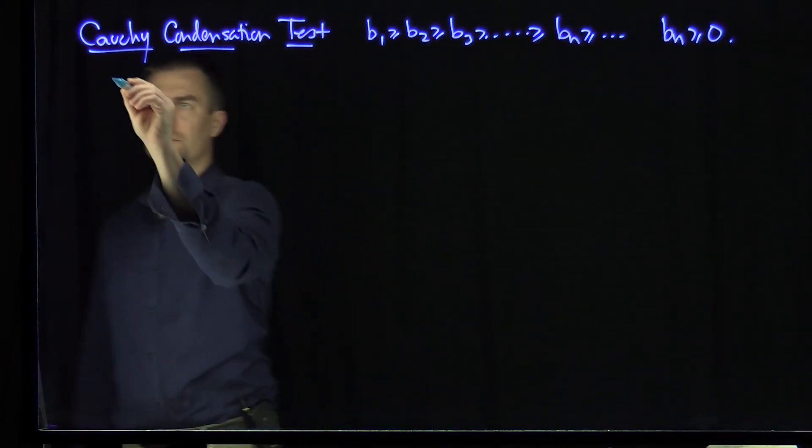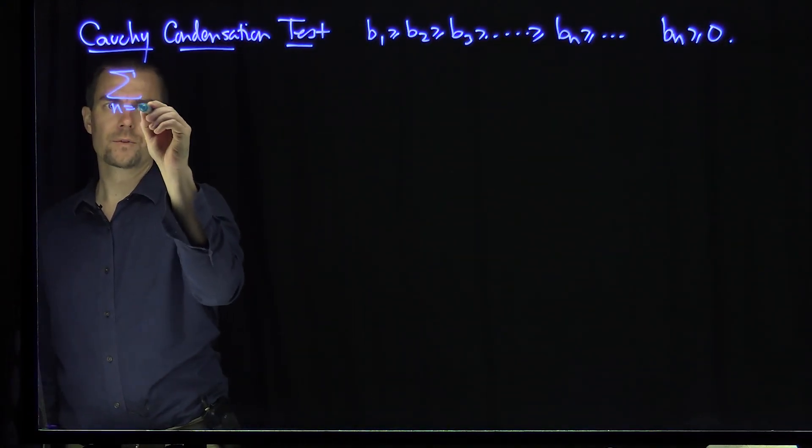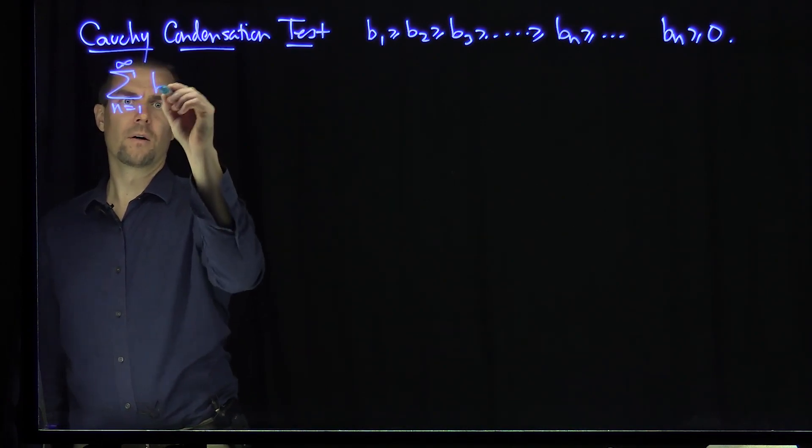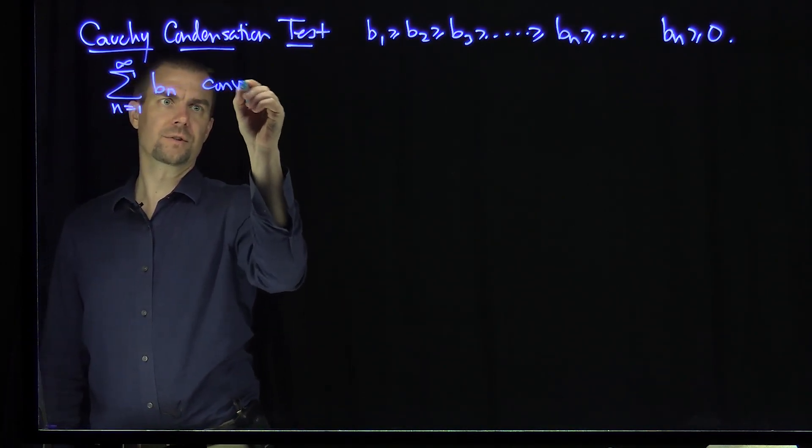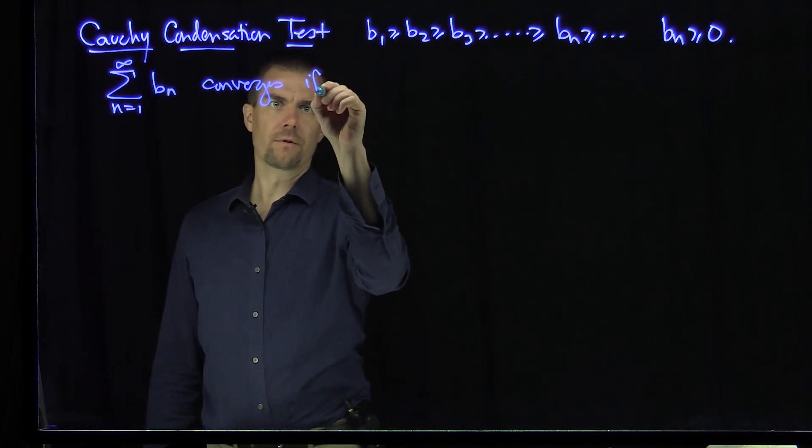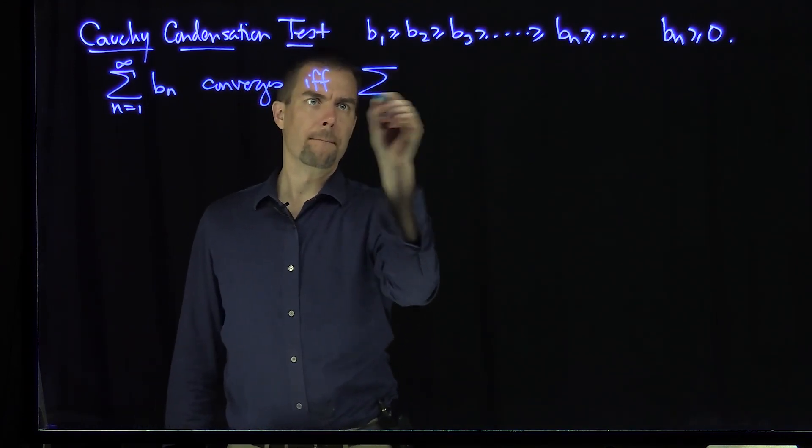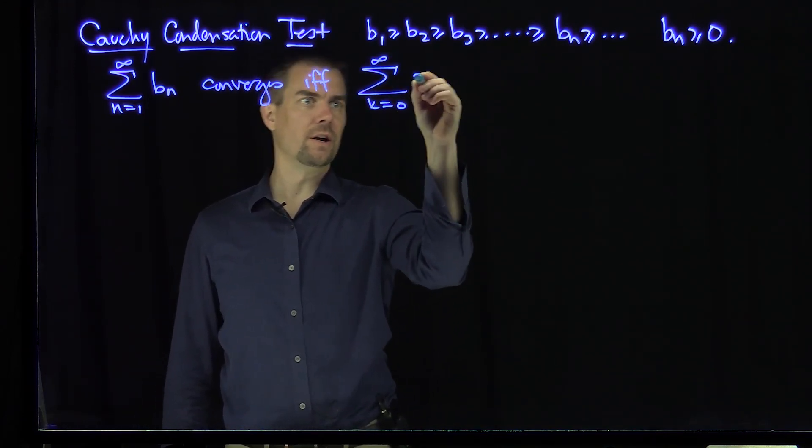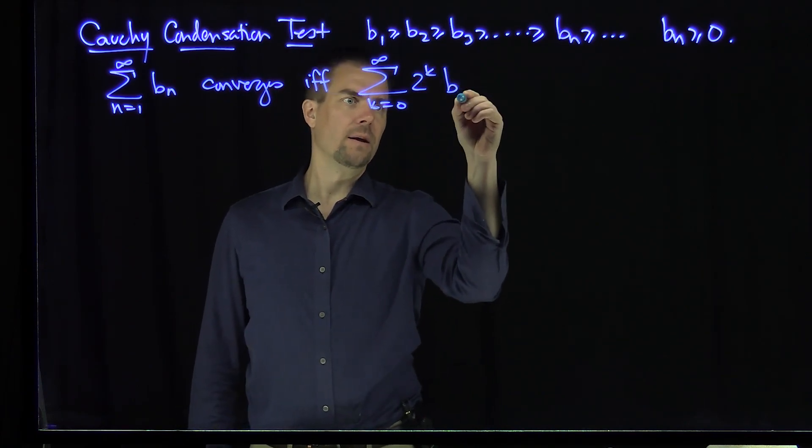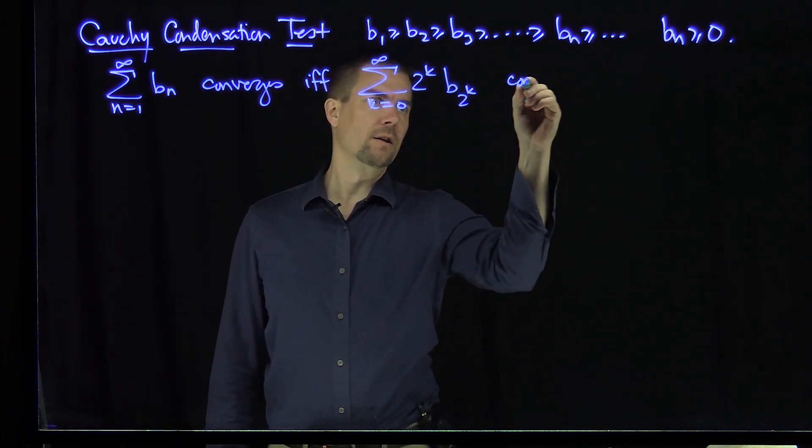if and only if the sum from k equals 0 to infinity of 2 to the power k times B sub 2 to the power k converges.